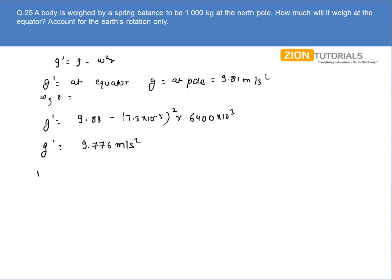We can calculate the weight as W = mg' = 1 × 9.776 = 9.776 N. That is the answer. If you want to calculate in kg, it will be approximately 0.9776 kg.